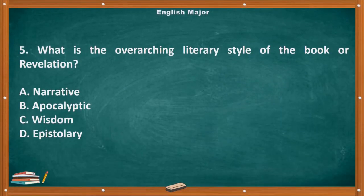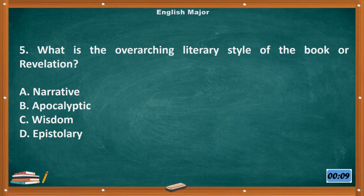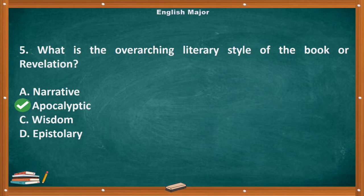Question number 5. What is the overarching literary style of the Book of Revelation? A. Narrative. B. Apocalyptic. C. Wisdom. D. Epistolary. The correct answer is letter B, Apocalyptic.